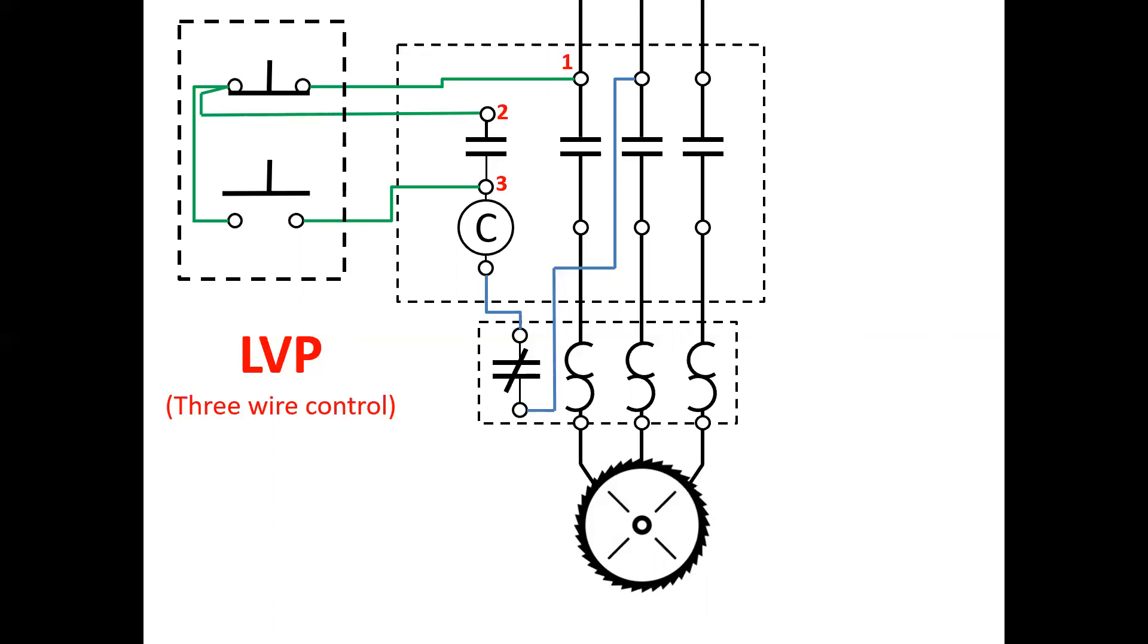Again, when we press the start push button down, it energizes the coil, which closes the contacts and starts the motor. And this brings us to the end of our presentation on low voltage protection relay control systems.